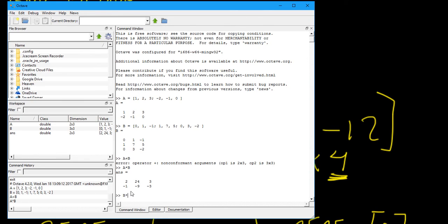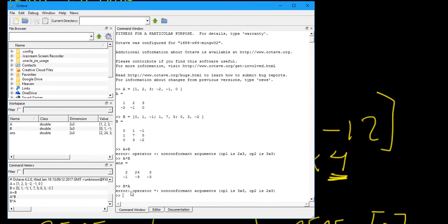Now, how about B times A? No, we cannot because now the dimensions do not match. B is a three by three matrix and A is a two by three. So the number of columns in this one is not equal to the number of rows in this one, which means that we cannot perform that operation.